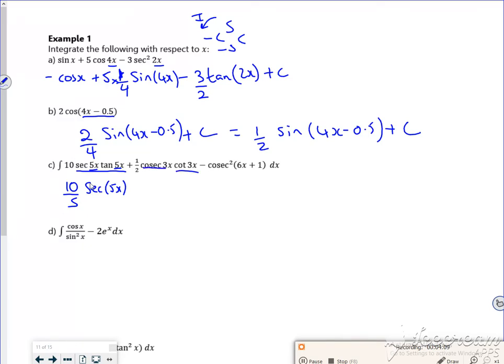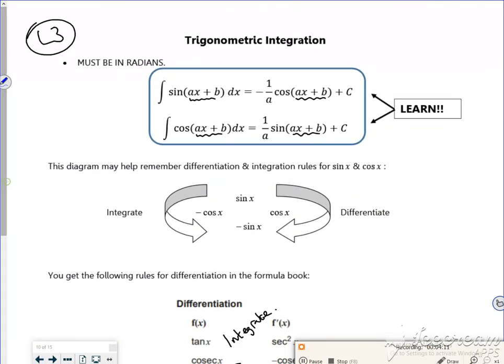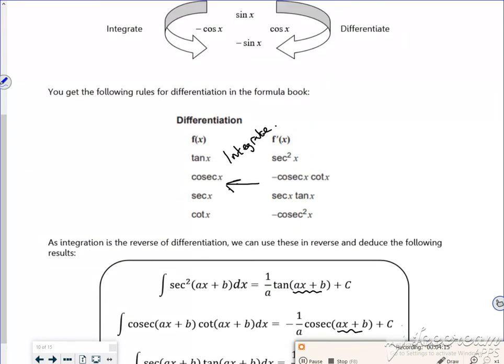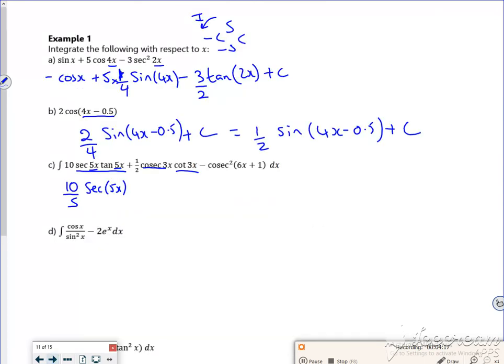Cosecant cot. So cosecant cot goes to minus cosecant. So it's going to be a minus, it's going to be a cosecant 3x. I've already got a half, I've already got a half but I have to differentiate the 3. So I've got a third, so I've got a sixth there haven't I?